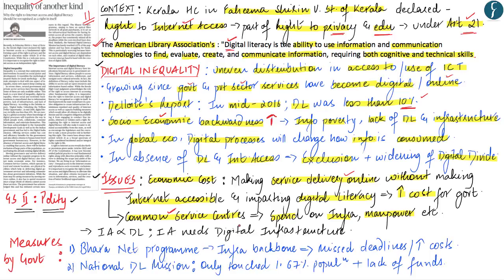Access to internet and digital literacy are directly correlated — there can be no digital literacy if people do not have access to internet, and this access in turn depends upon digital infrastructure, whether in the form of optical fiber networks or broadband. Until the requisite digital infrastructure is in place, people will not get access to internet, and if people do not have access to internet, they will never become digitally literate. Though the government has acknowledged this correlation and initiated certain measures, all such measures are not enough.